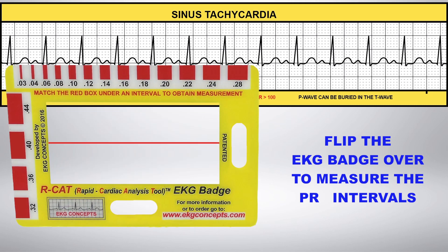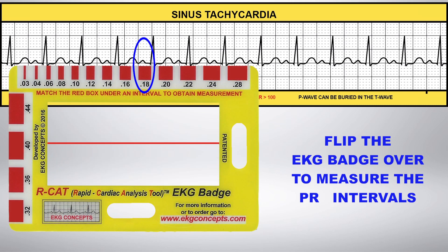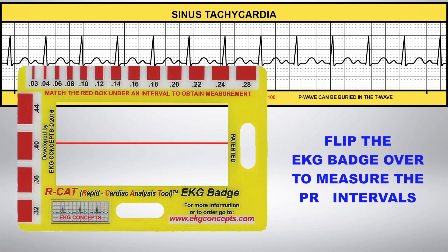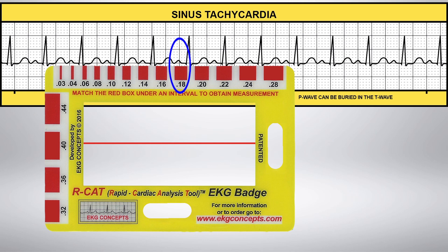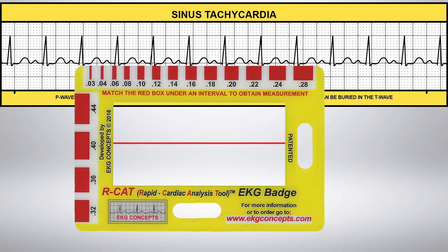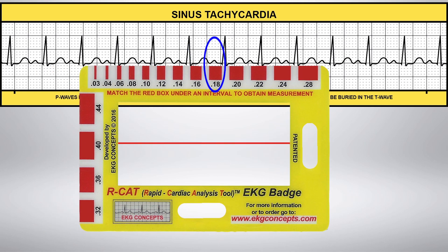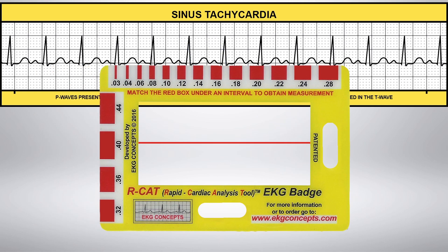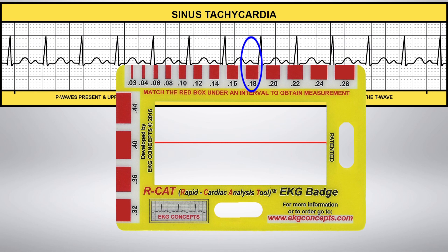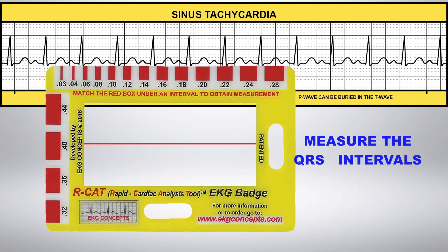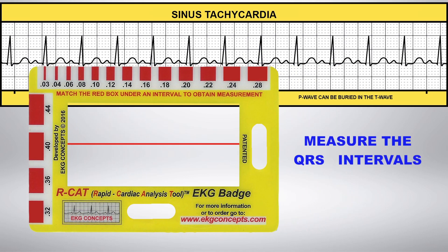Now flip the badge over to measure the PR intervals. With an elevated heart rate, the P wave can be buried in the T wave, making measurement of the PR interval difficult. In this example, the PR interval is consistently 0.18.